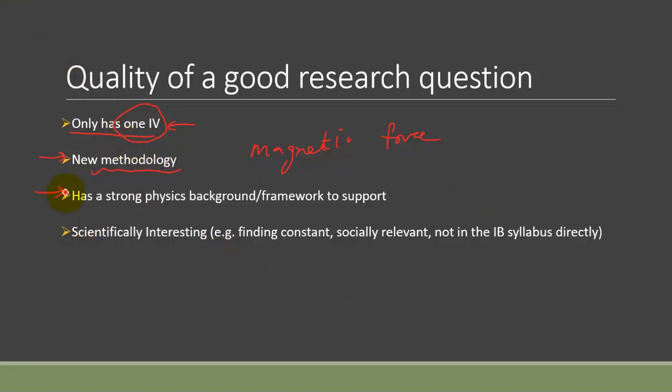Number three is that your research question should have a strong physics background and framework to support. That is to say hopefully before you start you should already find a certain formula or there should be some research done by other people so that you can follow and probably you can already see the independent and dependent variable has a certain mathematical relationship.